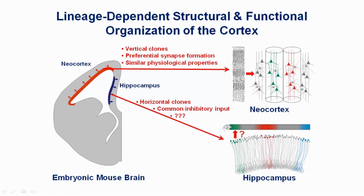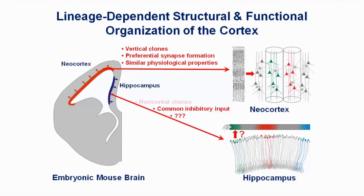In the neocortex, sister pyramidal cells are vertically aligned, preferentially develop synaptic connections, and share similar physiological properties. By contrast, in the hippocampus, sister pyramidal cells are horizontally distributed and do not preferentially develop connections, but receive common inhibitory synaptic input. It will be interesting in the future to understand the physiological implication of this lineage-dependent organization in the hippocampus.